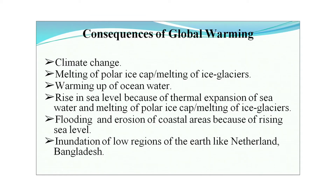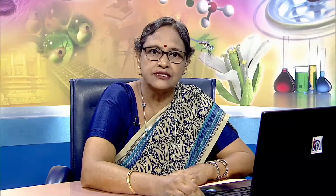Consequences of global warming include climate change, melting of polar ice caps, melting of ice glaciers, warming up of ocean water, rise in sea level due to thermal expansion of seawater and melting of polar ice caps, flooding and erosion of coastal areas due to rising sea levels, and inundation of low-lying regions like Netherlands and Bangladesh. We are also seeing more violent weather conditions — hurricanes, storms, and tornadoes.